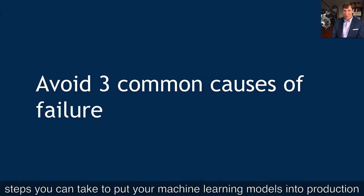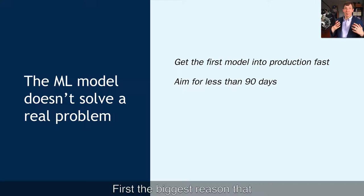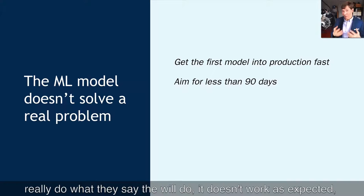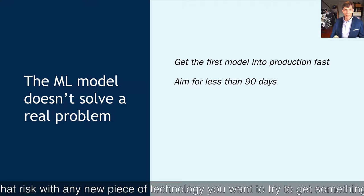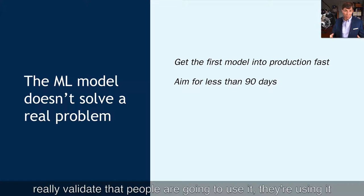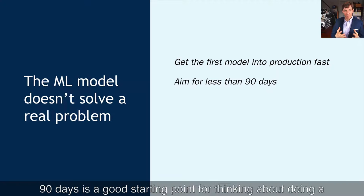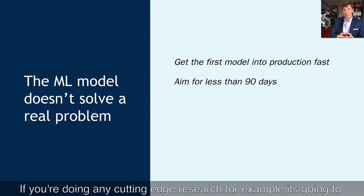Now let's talk about three common causes of failure. First, the biggest reason machine learning models don't work in production is because they don't solve a real problem. With all software, there's an element of risk — users don't really do what they say, it doesn't work as everyone expects, and customers say they want an application but don't actually use it. So get your model into production as fast as possible — ideally within 90 days — to validate that people are going to use it the way you expect and that your basic business assumptions are still true.